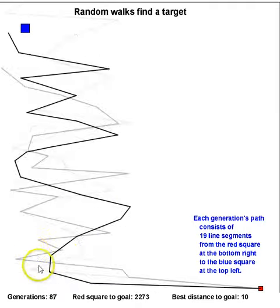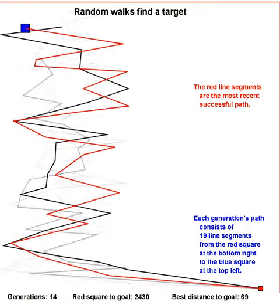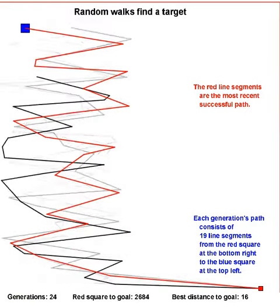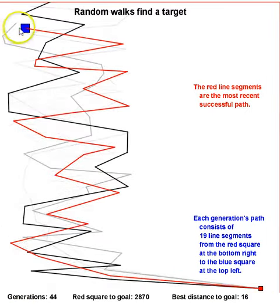You can see down here that we have the counting of the generations, and that we just made a successful path all the way from the red square to the blue square.